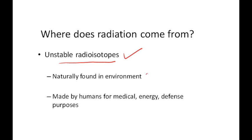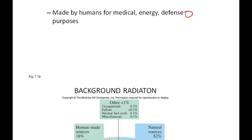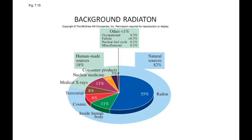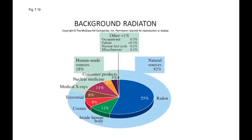Radioisotopes are naturally found in the environment, and they're also human-made for medical, energy, and defense purposes. So there are two sources: either naturally occurring or human-made.